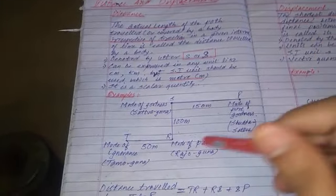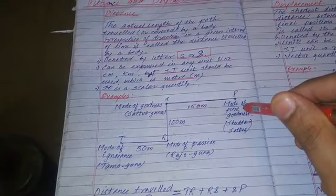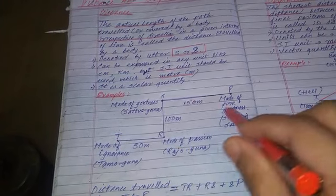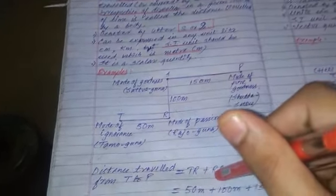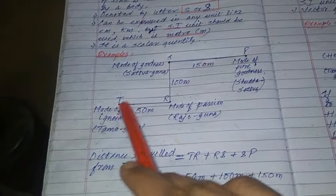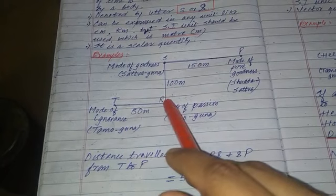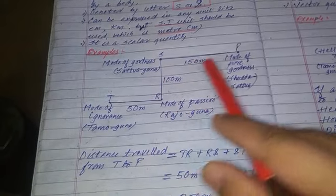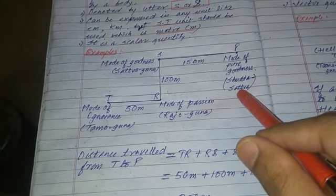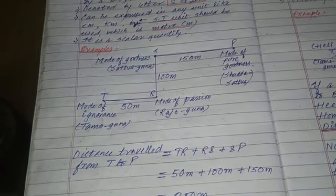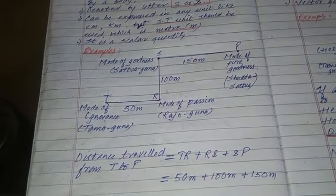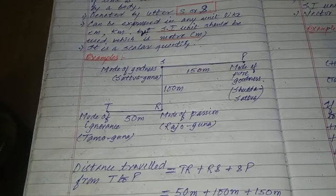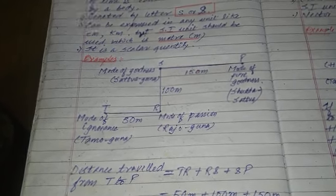Let's understand this in the form of this figure. In front of you, there are certain points marked as T, R, S, and P. In the point T, I have marked it as mode of ignorance. Point R as mode of passion. Point S as mode of goodness. And point P as mode of pure goodness.